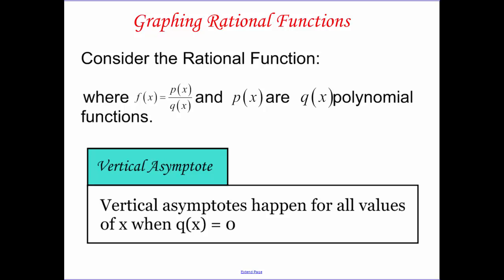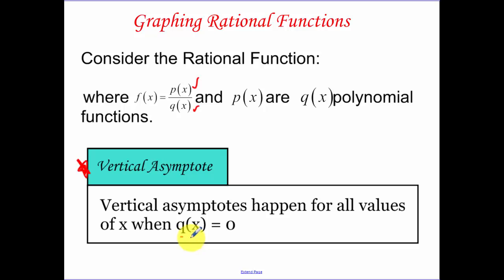Today we're going to be talking about graphing rational functions. Consider the rational function where we have a polynomial on the top and a polynomial on the bottom. Vertical asymptotes — make sure you have this written in your notes, this is very important — vertical asymptotes happen for all values when the bottom equals zero. Those were our restricted values from the last lesson.